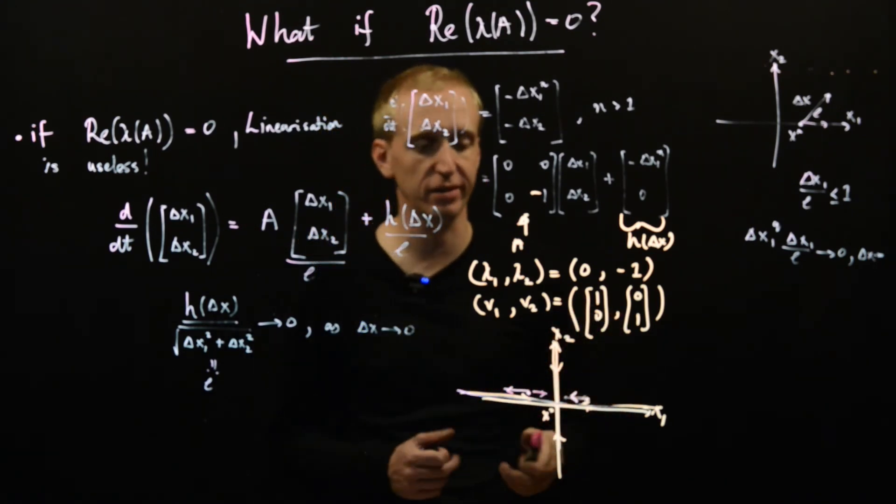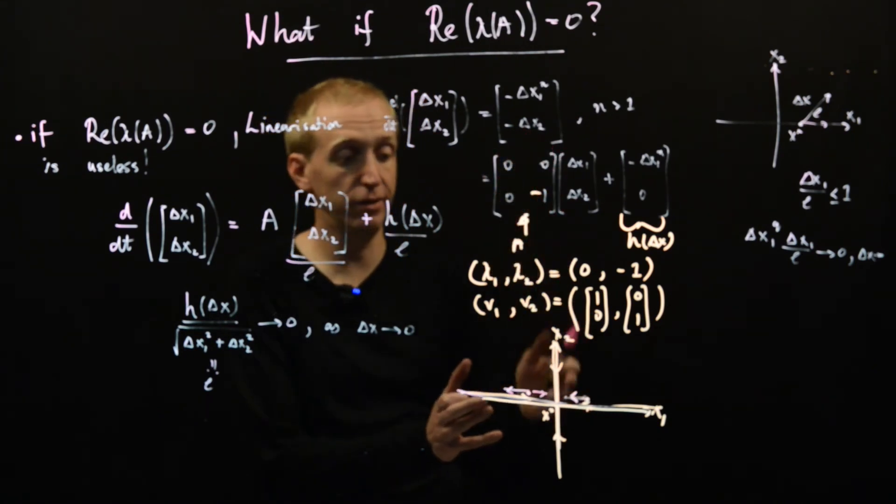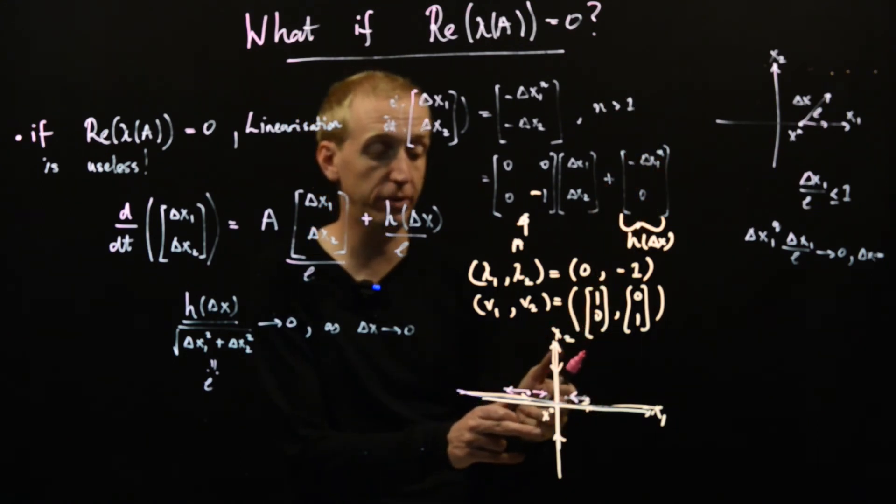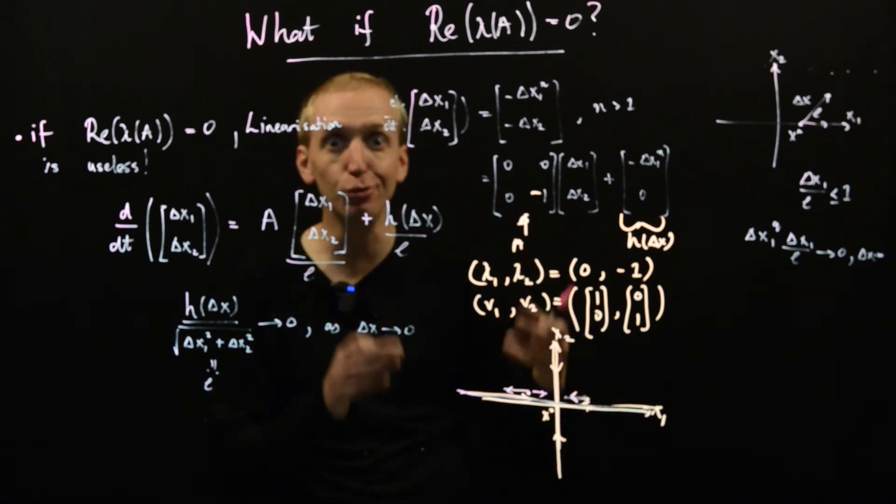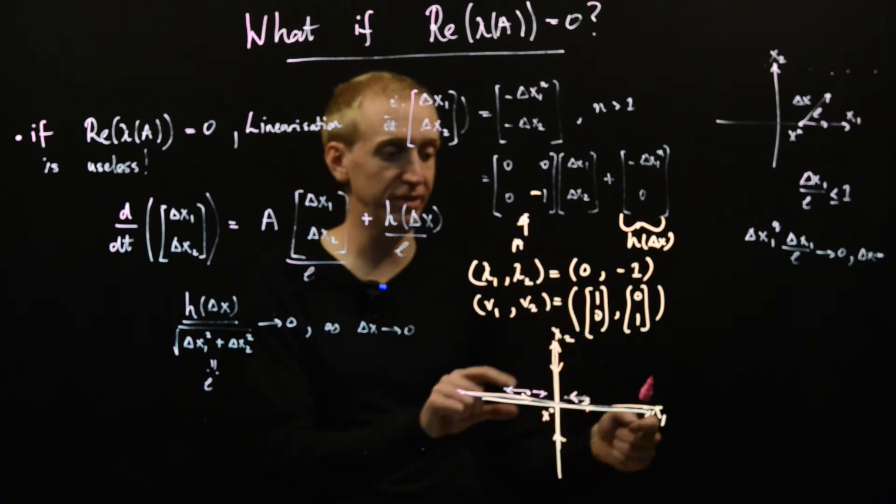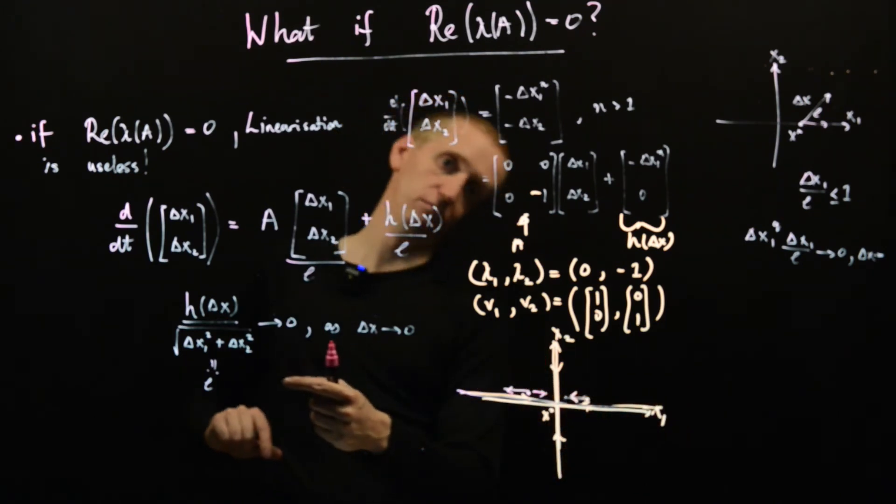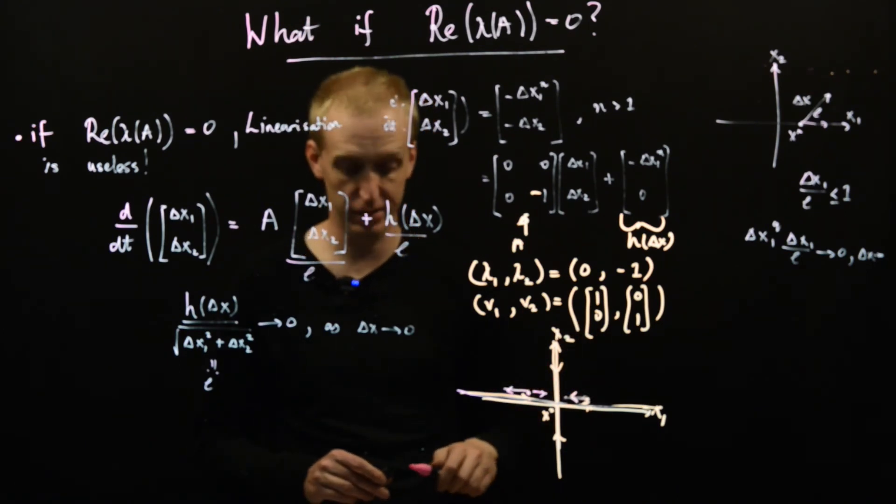And all of this, all that this shows is that if you have zero eigenvalues, you need to look at the behavior of the higher order terms to work out whether your equilibrium point is going to be stable, or you're in fact going to get some weird new kind of non-linear behavior, which we haven't discussed, where we have trajectories coming in like this and like this, but then heading out this way. This wasn't covered by any of the cases that we looked at this time.